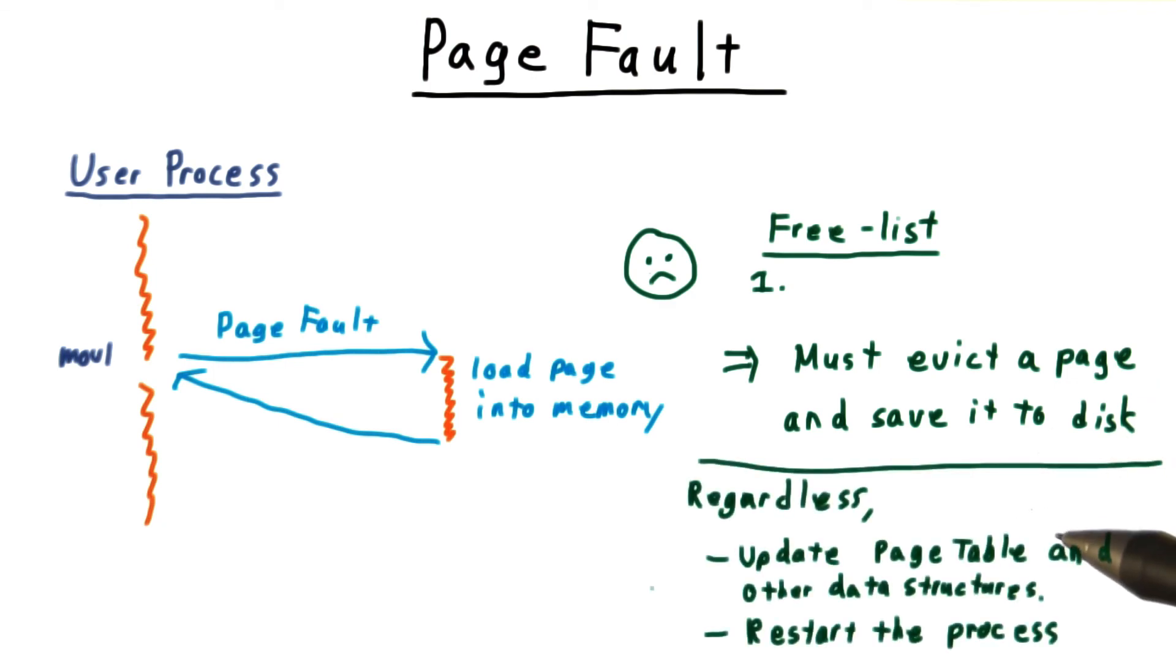So one way or another, we now have a free physical page in memory, to which we can write the data we need from disk. Then we update the processes page table, and any other data structures that our page fault handler needs to keep track of. And then we're ready to restart the process and let it continue on its way.